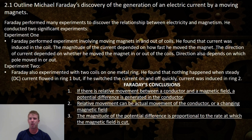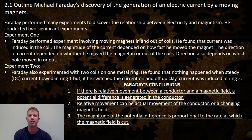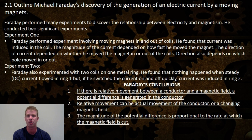Michael Faraday's conclusions were: 1. If there is relative movement between a conductor and a magnetic field, a potential difference is generated. 2. Relative movement can be the actual movement of the conductor or a changing magnetic field. 3. The magnitude of the potential difference is proportional to the rate at which the magnetic field is cut.